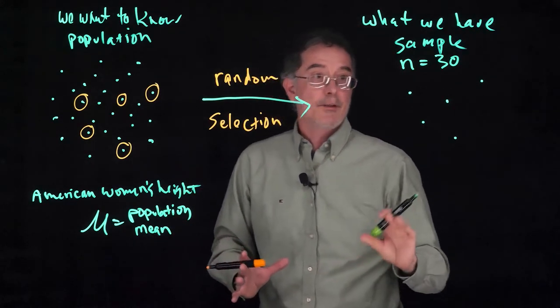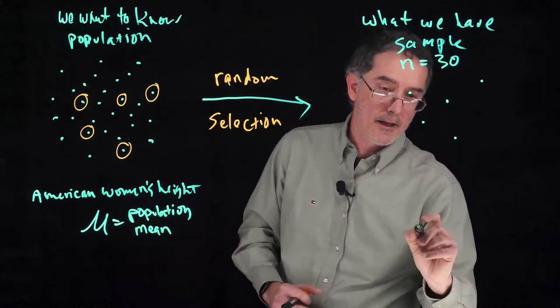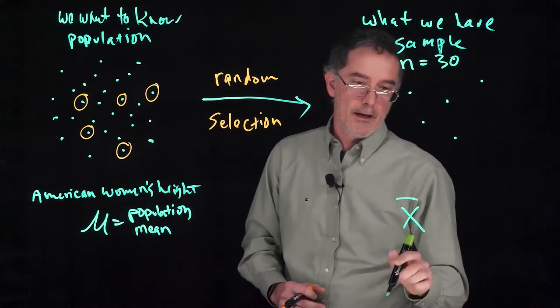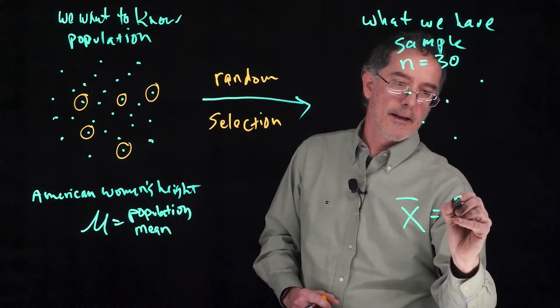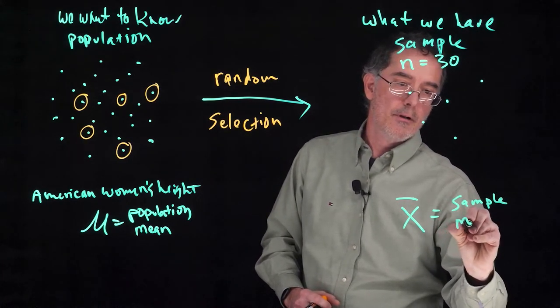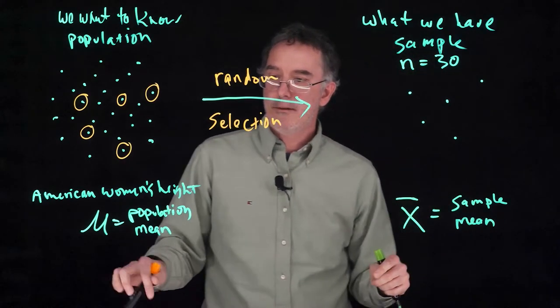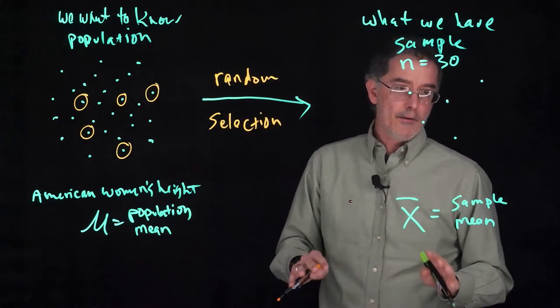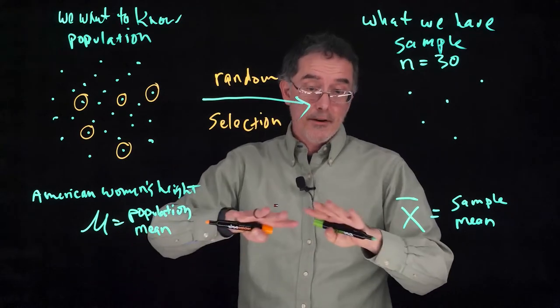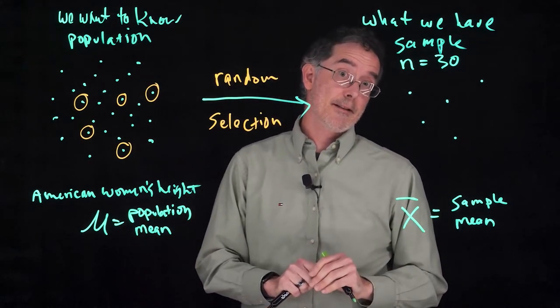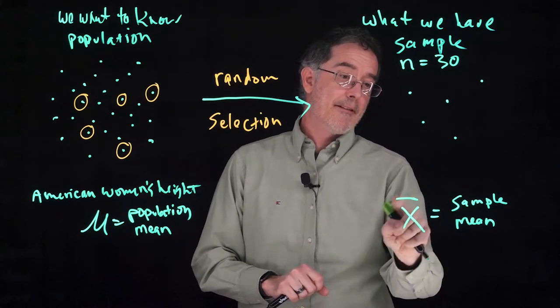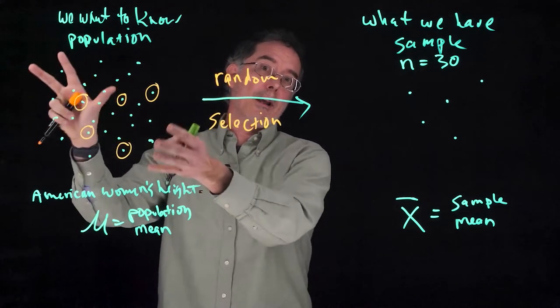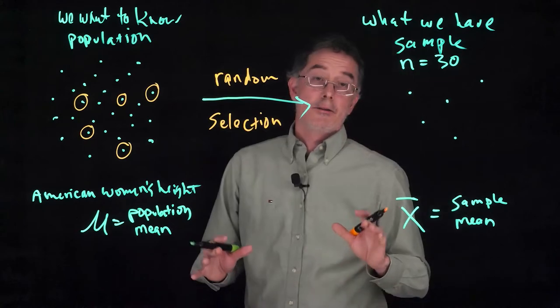What we can do is we can measure the height of each of those 30 people that are in our study, and that average height is going to be called X bar. X with a line over the top, that is a sample mean or average. There's a different symbol for the population mean compared to the sample mean. Notice that both of these are means, and therefore they're both descriptive statistics, because this is an average that's summarizing this data set, and this is an average that's summarizing this data set, although we don't actually have access to that whole data set.